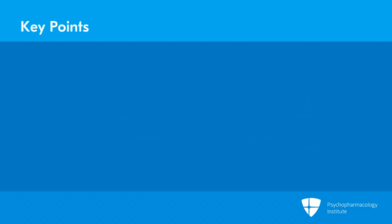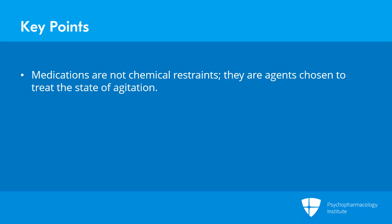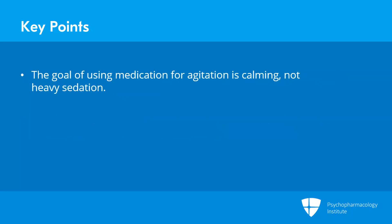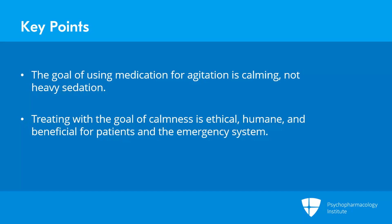Our key points when thinking about using medications to treat agitation: medications are not chemical restraints, but appropriate agents chosen to treat the disease state of acute agitation. In many cases, these are FDA-approved treatments for agitation, or treatments that meet community standards. The medication goal in agitation is calmness — calming people to tranquility — not to see how heavily you can sedate them. If you work in an emergency setting with limited space and time, you don't have the luxury of rendering somebody unconscious for 16 hours, because that denies other people the opportunity to get help and doesn't help the unconscious patient anyway. Treating with a goal of calmness is far more ethical, humane, and beneficial for patients, and benefits the overall emergency system as a whole.